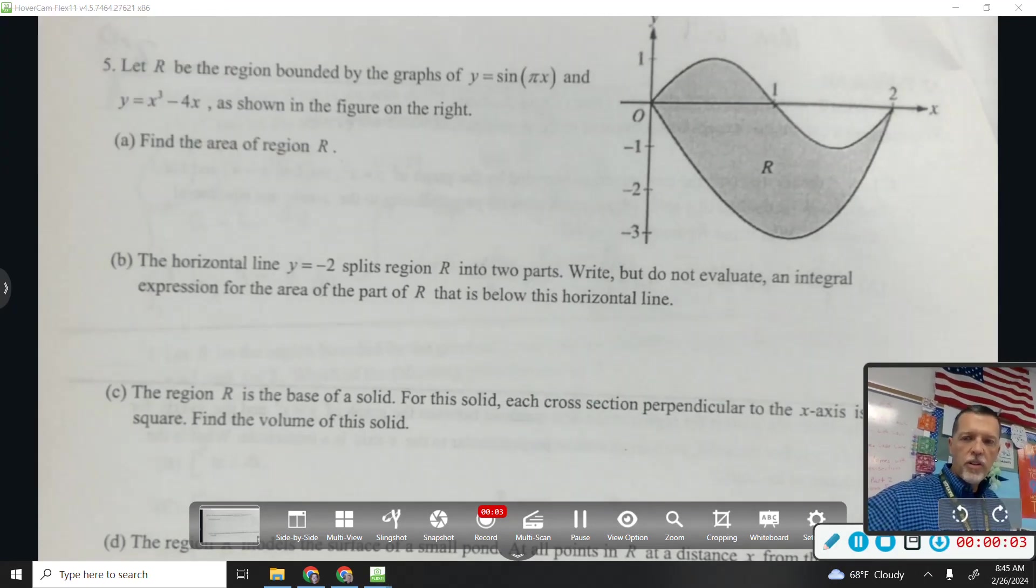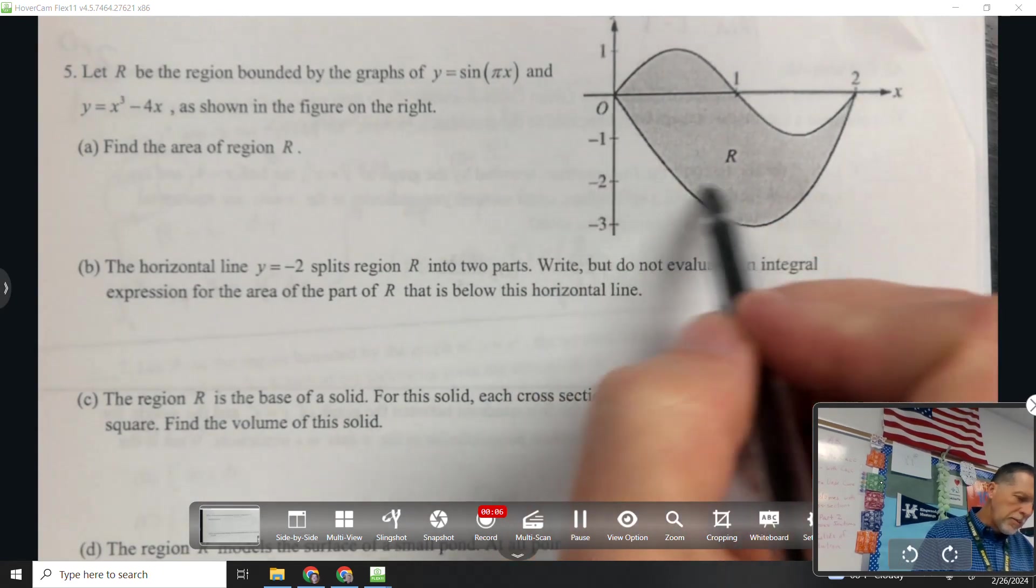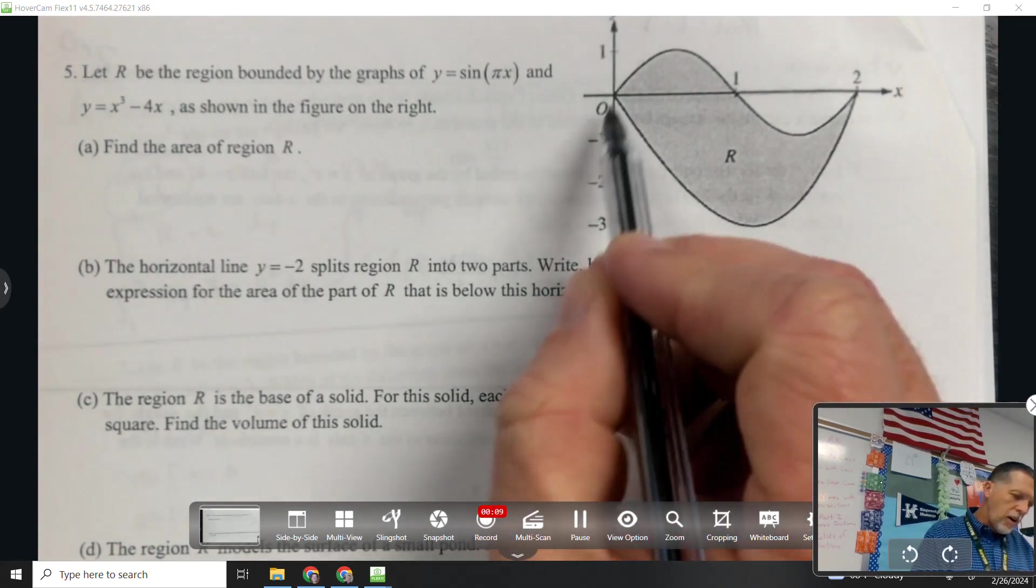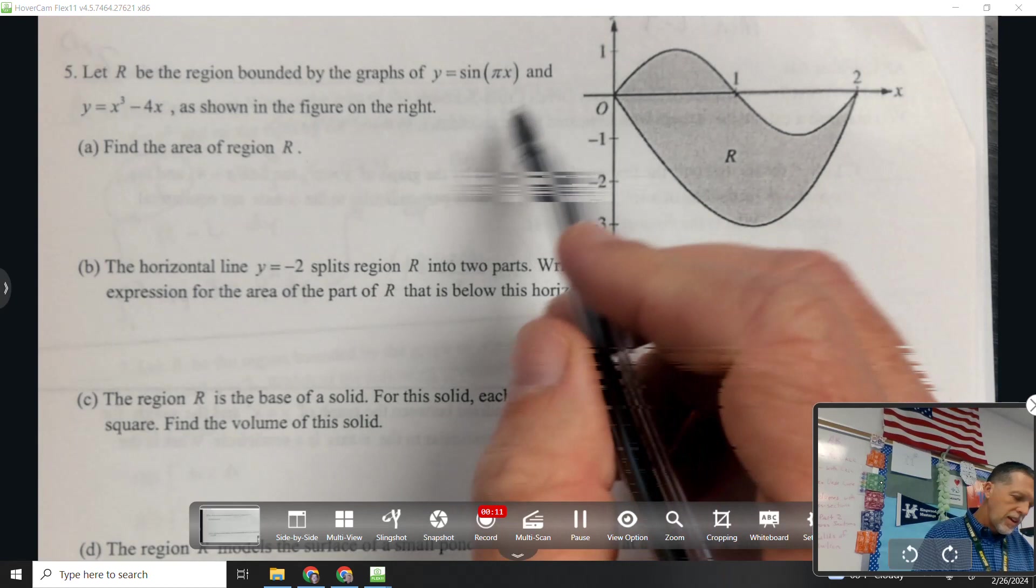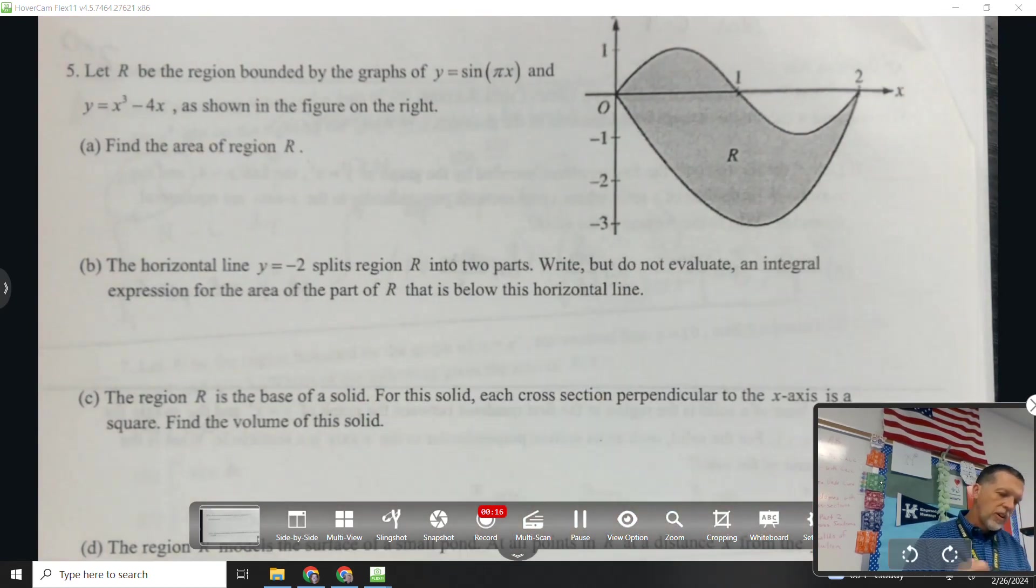So number 5 on worksheet 2. Let R be the region bounded by the graphs of y equals sine of pi x and y equals x cubed minus 4x, as shown in the figure on the right.